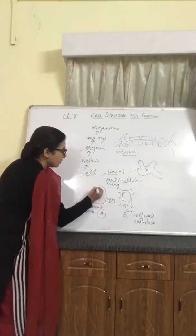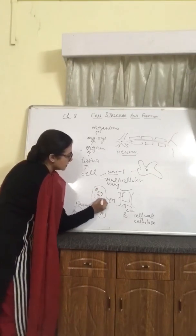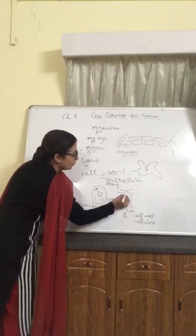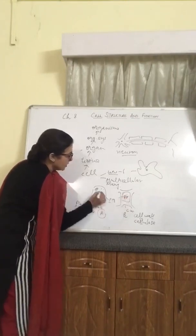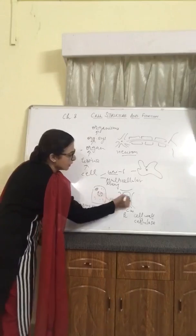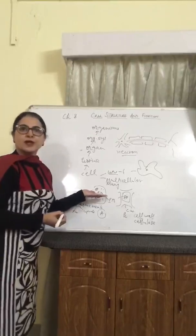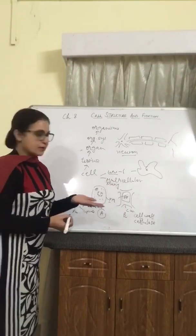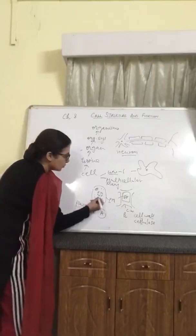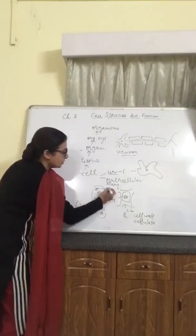There are many small structures in the cell known as organelles. There is the nucleus, the cytoplasm, the nuclear membrane, the nucleolus, and small thread-like structures known as chromosomes. These chromosomes are responsible for carrying hereditary features from parents to offspring. There are other structures like the mitochondria, which gives energy.